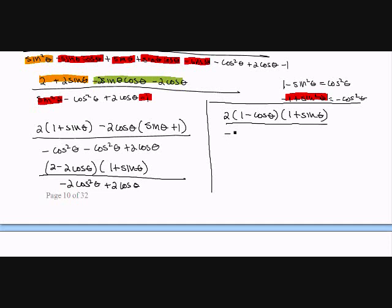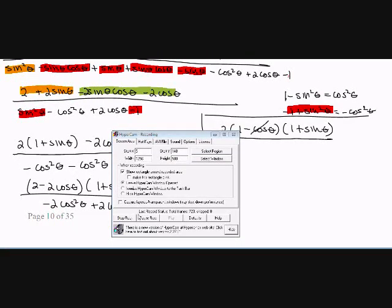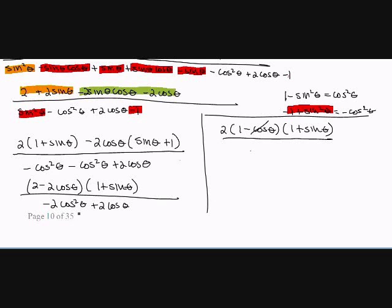So taking out a 2 in the numerator gives 2 times 1 minus cosine theta times 1 plus sine theta. And taking out 2 cosine theta in the denominator gives 2 cosine theta times negative cosine theta plus 1. These two 2's cancel, and the 1 minus cosine theta factor cancels with negative cosine theta plus 1. So I get 1 plus sine theta all over cosine theta.